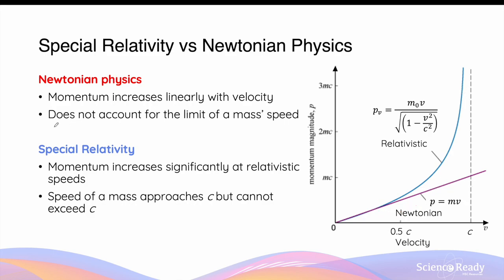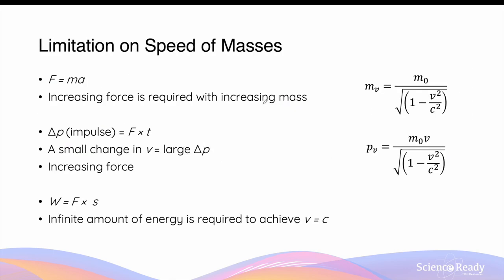Momentum in Newtonian physics does not account for the limit on a mass's speed. Special relativity places a limit on the speed of an object with mass. By Newton's second law, the force required to accelerate an object is equal to its mass multiplied by its acceleration. Since mass dilation is an implication of special relativity, we need an increasing amount of force to maintain a constant acceleration to accommodate the increasing mass of the object. That means as the object approaches the speed of light, we will eventually need an infinite amount of force to accelerate it towards the speed of light.